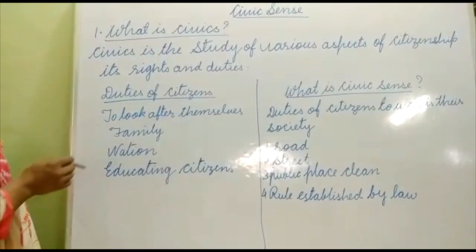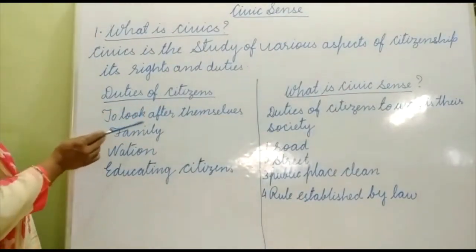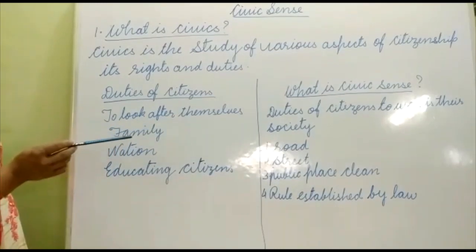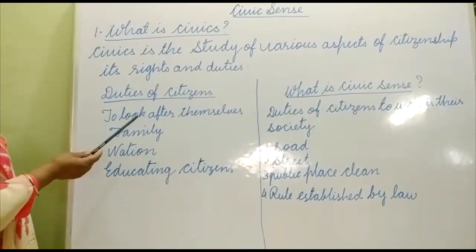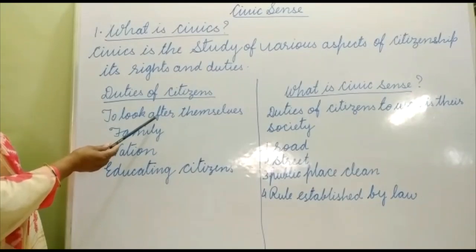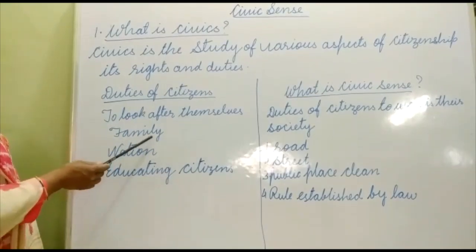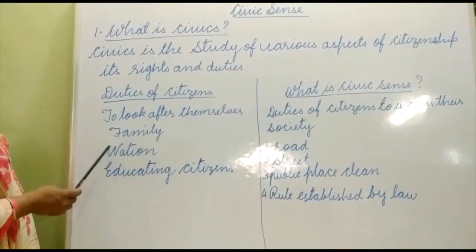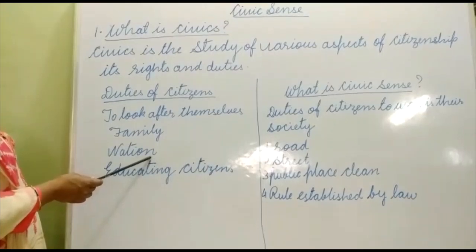The first duty of a citizen is to look after themselves. We should be well aware of our duties and the rules and regulations that we have to follow. Second, we should take care of our family. Next, we should take care of our nation by not spoiling anything which is useful for the nation.